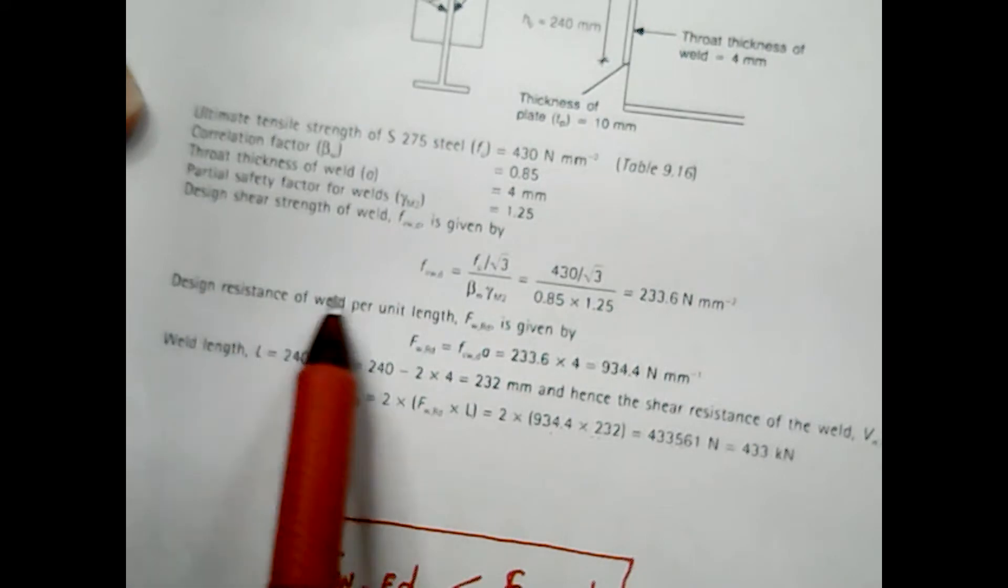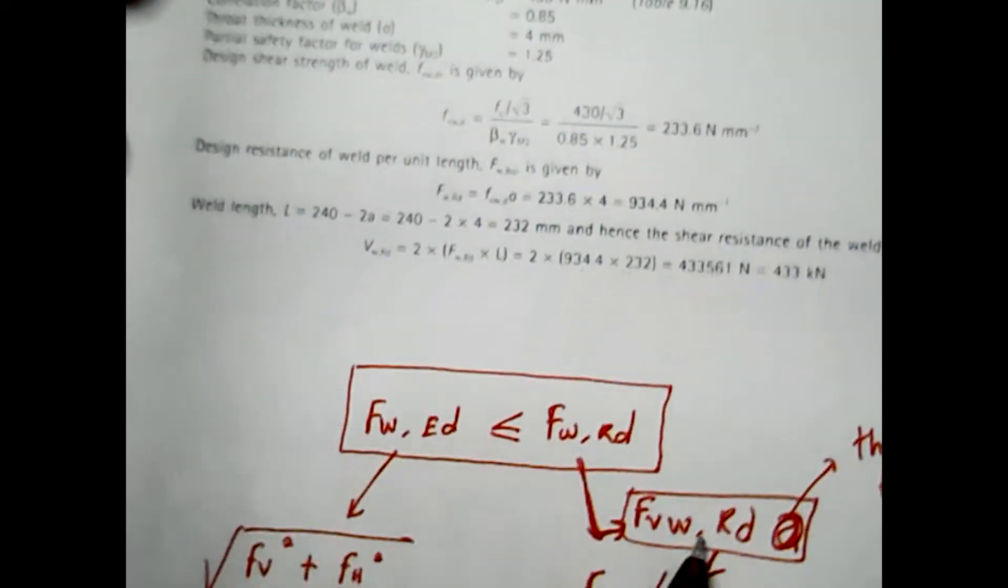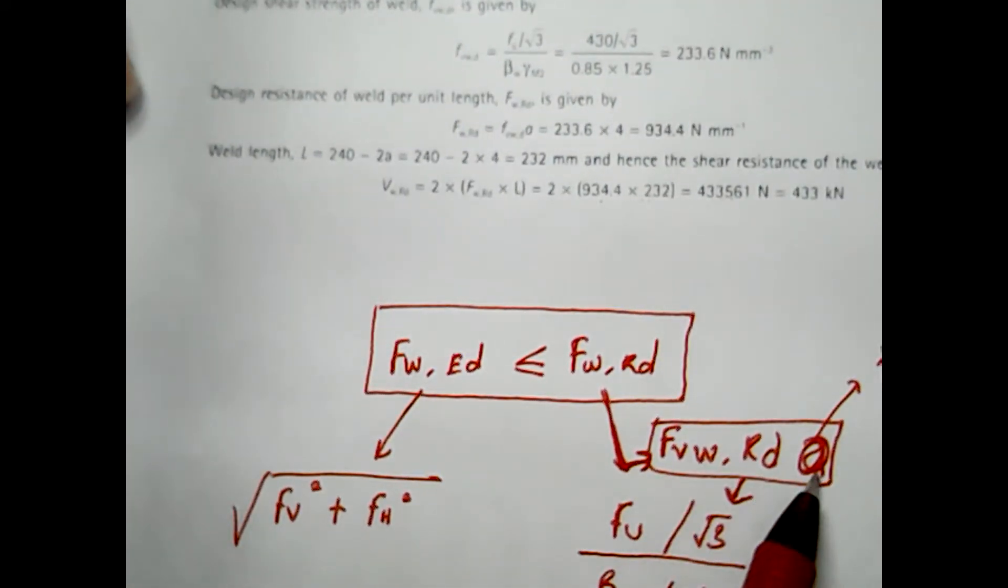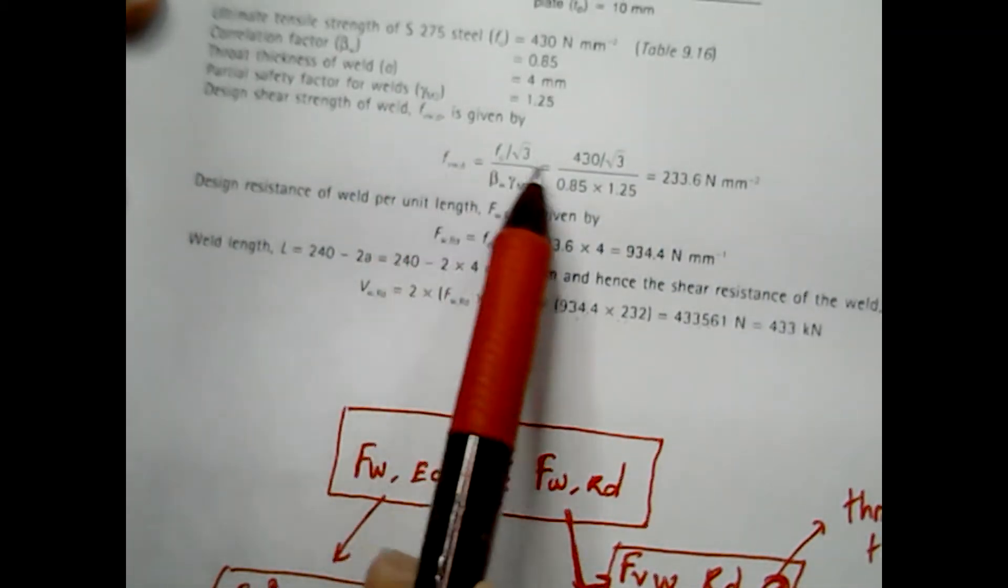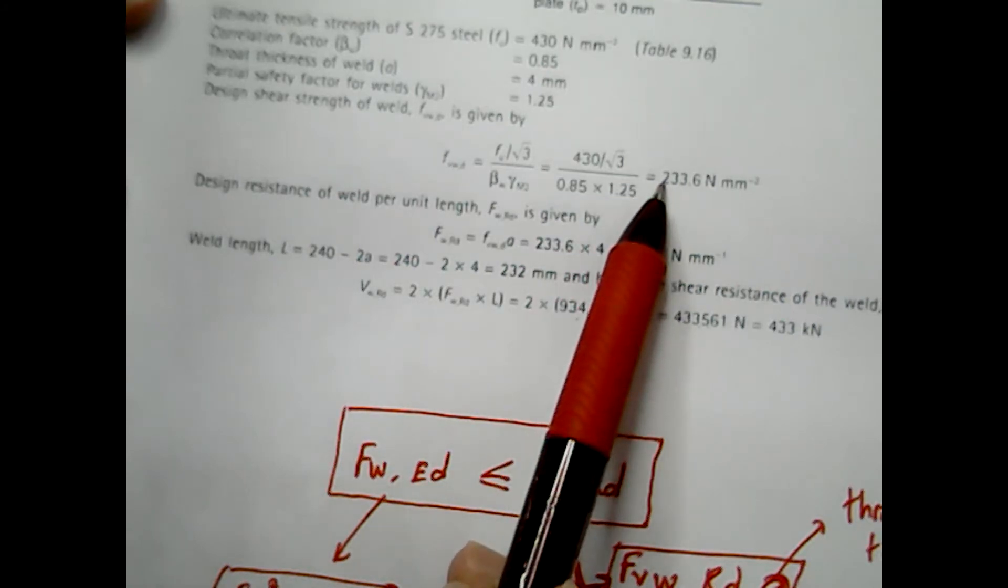Meanwhile, once you get that Fvw,Rd, you need to multiply with the throat thickness. In which Fvw,d is given as 233.6...